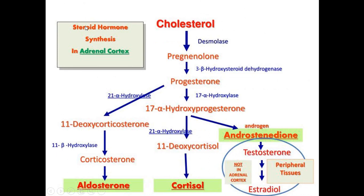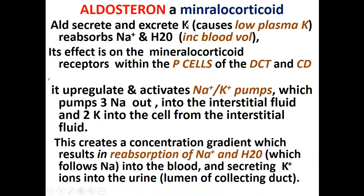All these hormones — mainly aldosterone, cortisol, and androstenedione — are all coming from the parent compound cholesterol. Cholesterol is the precursor of aldosterone, cortisol, androstenedione, and mainly your testosterone and estrogen. Now, aldosterone's main function is reabsorption or retention of sodium in your body and excretion of potassium from your body — excretion of potassium and reabsorption of sodium and water.